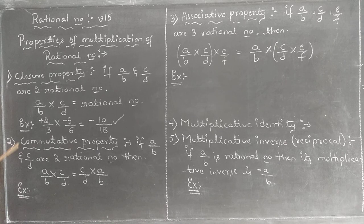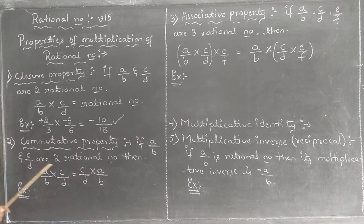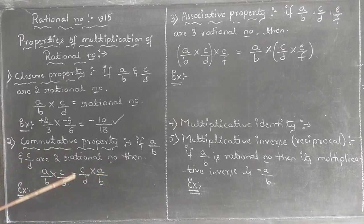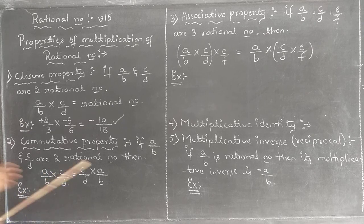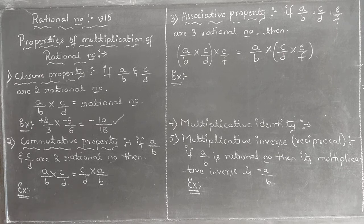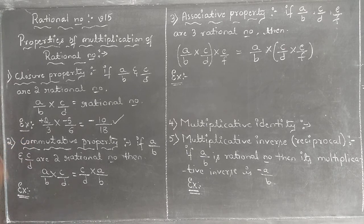The next property is commutative property. It states that if A/B and C/D are two rational numbers, then A/B into C/D should be equal to C/D into A/B. That is, if we multiply two rational numbers in one order and then exchange them, we should get the same result. That is what this property says. Now let us check whether multiplication of rational numbers satisfies the commutative property.